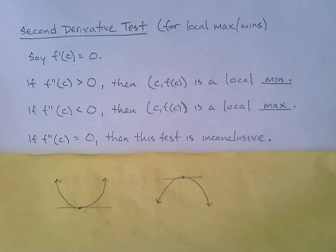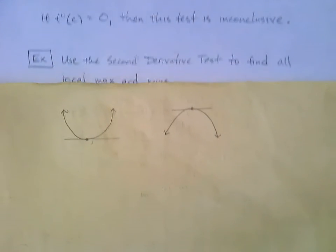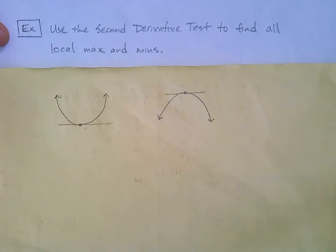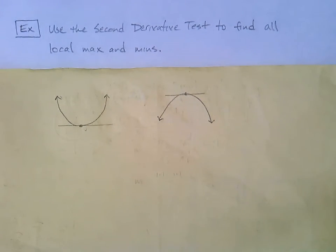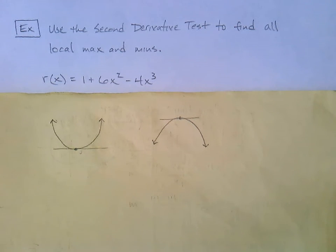Let's see an example. We are going to find local maxes and mins using the second derivative test. Here's the function. We'll just keep it simple this time. Use the second derivative test to find all local maxes and mins. r(x) equals 1 plus 6x² minus 4x³. Now the way you go about this test, the test seems, it makes sense, but how do you actually apply it?